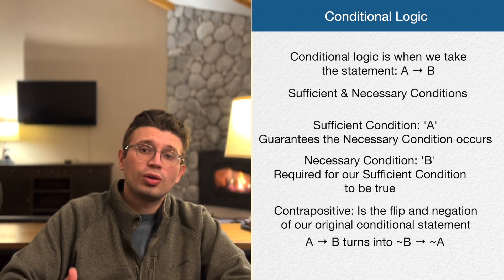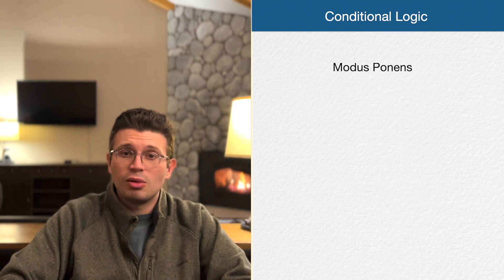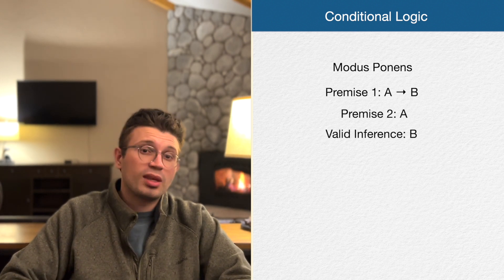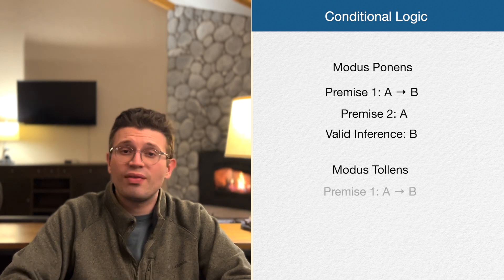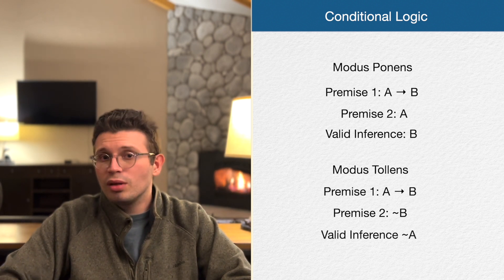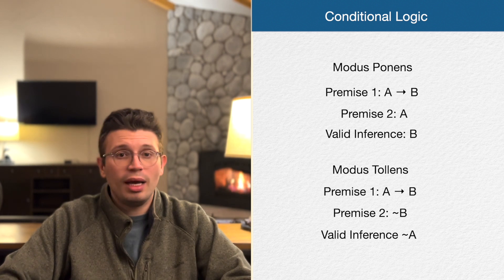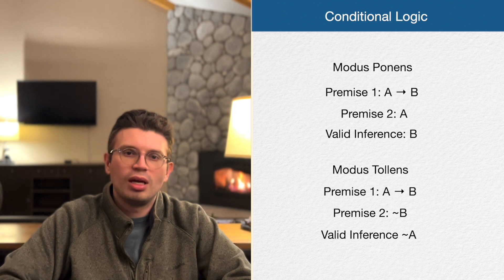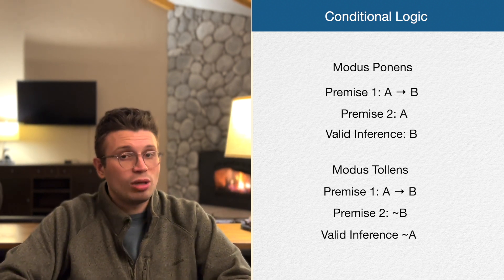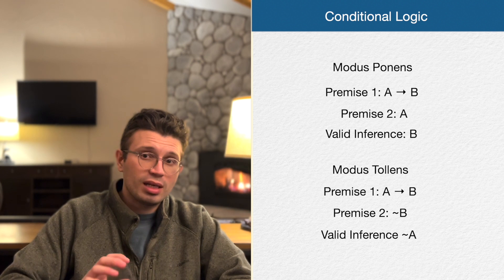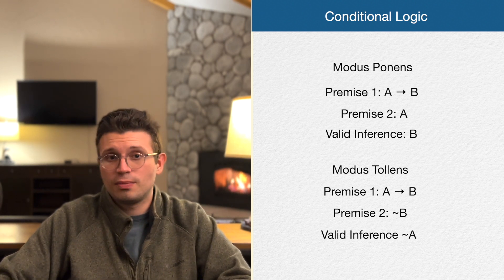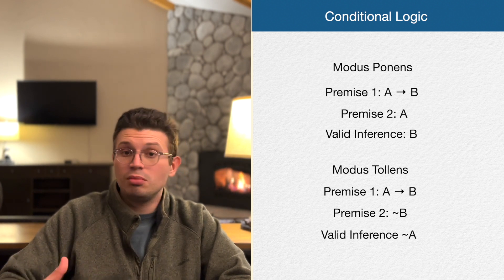We have two basic inferences from conditional logic. First is modus ponens: premise one is 'if A then B,' premise two is 'A,' so the valid inference is B. Then we have modus tollens: premise one is 'if A then B,' premise two is 'not B,' so the valid inference is 'not A.' Both setups are prime candidates for must be true questions because they both guarantee something. If you have a conditional and a premise that gives you the sufficient condition, you can validly conclude you have the necessary condition — and vice versa.